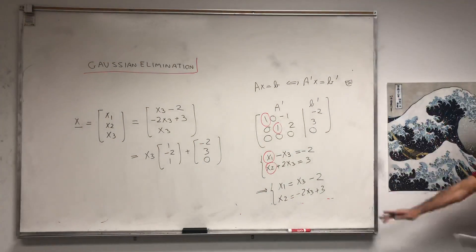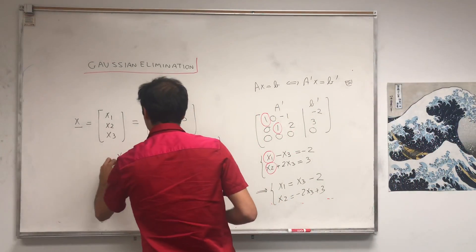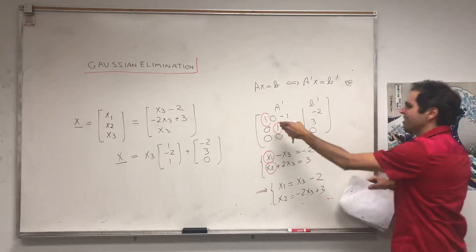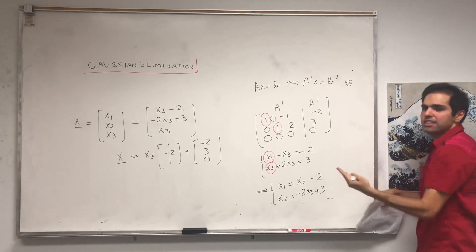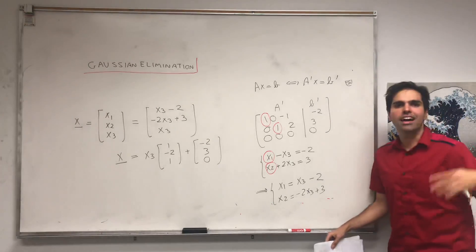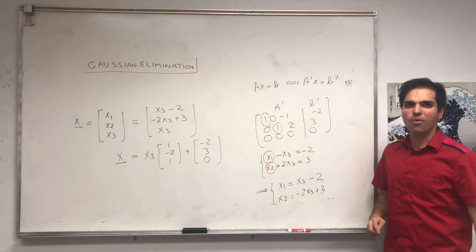And therefore, again, using this process of row reduction, which preserves the solution, and the fact that the matrix is so simplified that you can solve the system directly, we have that, actually, if there's a solution, Gaussian elimination always works.